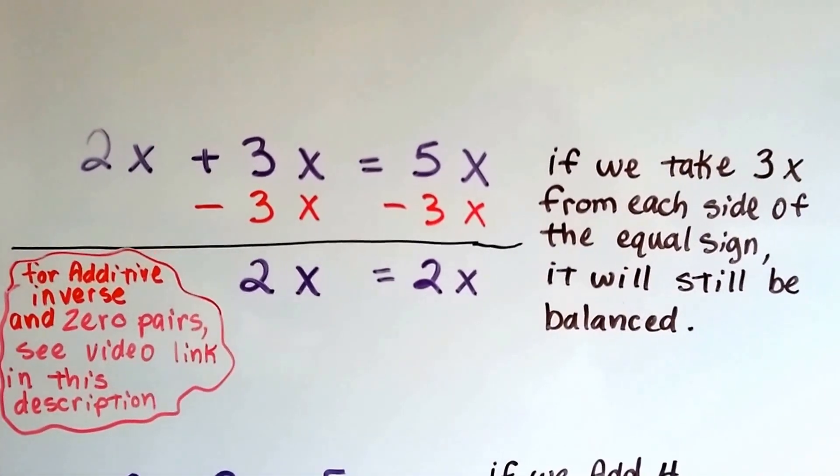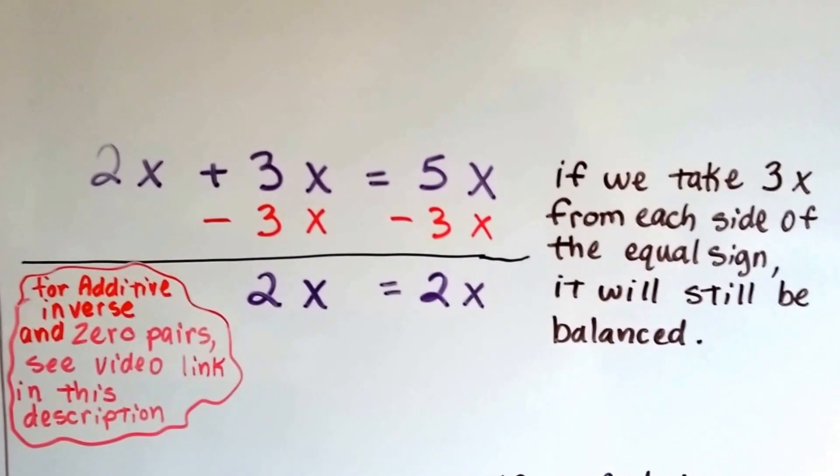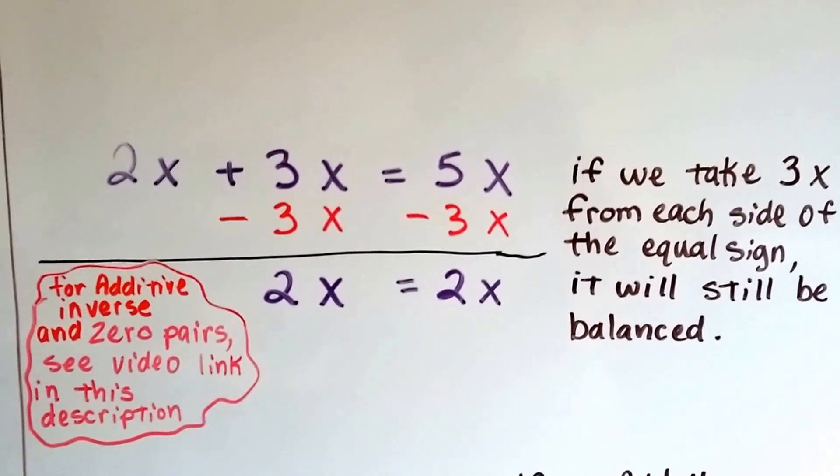If we take 3x from each side of the equal sign, it'll still be balanced. We take away 3x on the left side and 3x on the right side, we end up with 2x on each side.